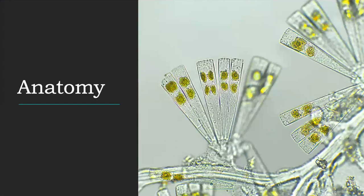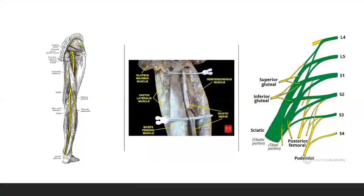We are going to start with discussing the anatomy. The nerve roots that make up the sciatic nerve are the L4 to S3 nerve roots. This nerve is one of the widest nerves in the body and it measures two centimeters wide, as you can see in this beautiful dissection. Its course is along the posterior aspect of the thigh, and when it reaches the popliteal fossa it then bifurcates into the tibial nerve and the common peroneal nerve.